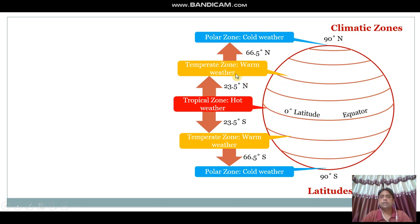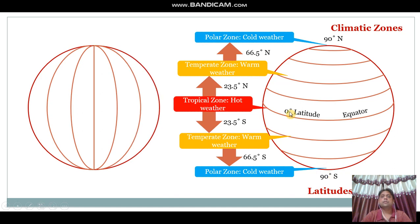From 66.5 degrees to 90 degrees north and south, we have cold weather or polar zones, where we find the Arctic cap and the Antarctic cap. The Antarctic is a landmass and the Arctic is an ocean. So basically, we can categorize weather conditions into three formats: hot, warm, and cold, corresponding to tropical, temperate, and polar zones.